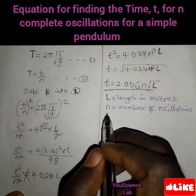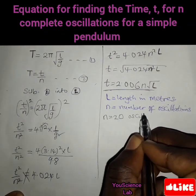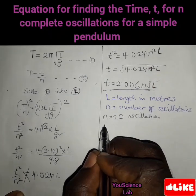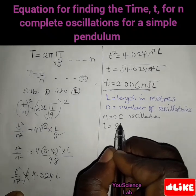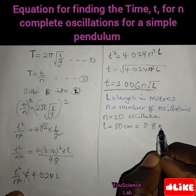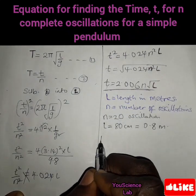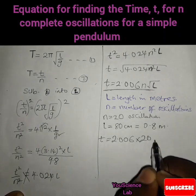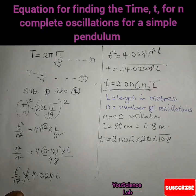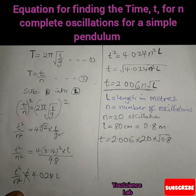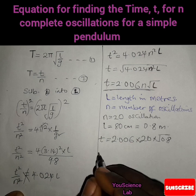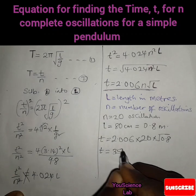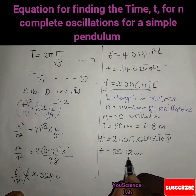For example, if n equals 20 oscillations and the length of the pendulum is 70 centimeters, which is the same as 0.8 meters, then the time to complete those 20 oscillations is t equals 2.006 times 20 times the square root of 0.8, which gives approximately 35.88 seconds.